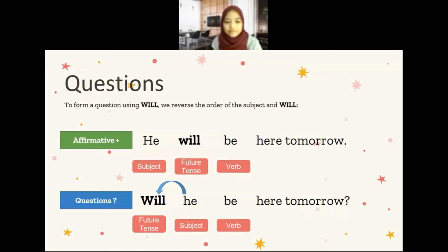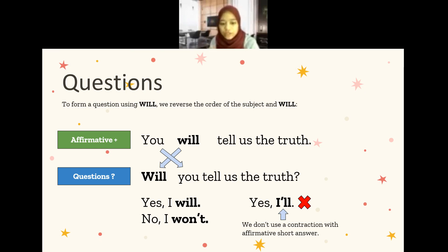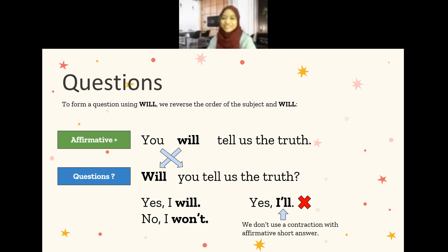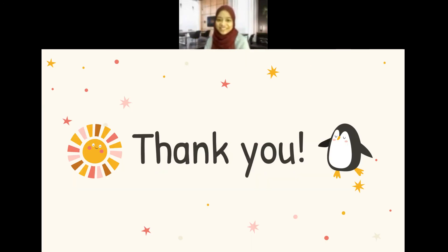Another example: for the affirmative, you will tell us the truth. So when you ask the question: will you tell us the truth? To answer the question: yes, I will, or no, I won't. We don't use the contraction with affirmative short answers — like yes, I will. So that's all.